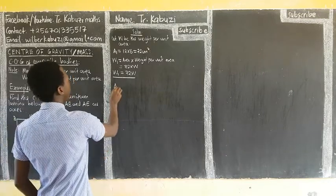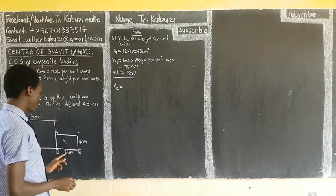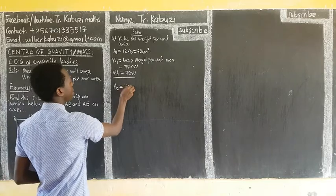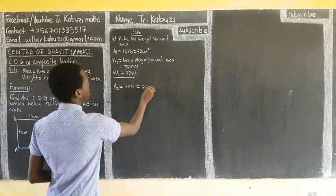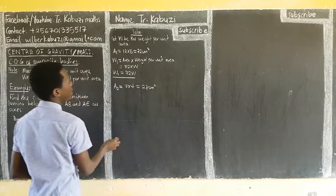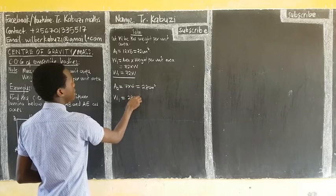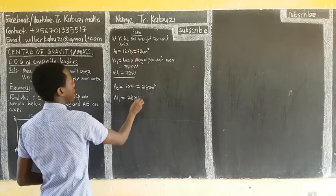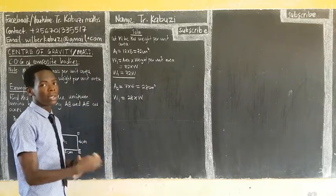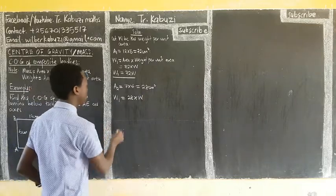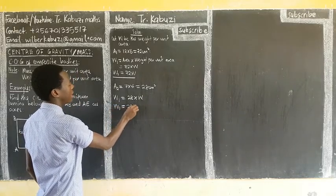The area of the second body is also a rectangle. With its dimensions, we get 7 times 4, which gives us 28 centimeters squared. To get the weight of the second body, we take the area times the weight per unit area W. So W2 = 28W.